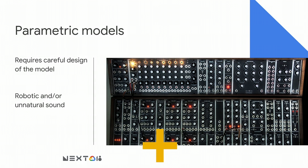With parametric, we can get away with less data because we already have a model that approximates how the human vocal tract sounds. The problem is that the quality of the speech produced is limited by the quality of the model, and these are never perfect. So the speech ends up sounding somewhat noisy, robotic, and unnatural.